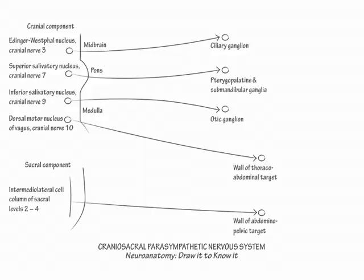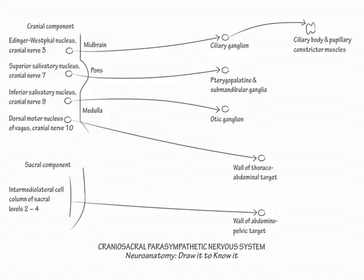The ganglia lie far from the origination nuclei and near to their target organs. The postganglionic parasympathetic fibers from the ciliary ganglion terminate in the ciliary body, which produces lens thickening, and in the pupillary constrictors, which produce pupillary constriction.